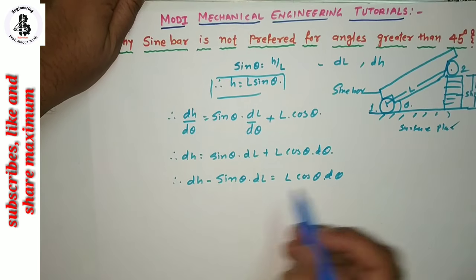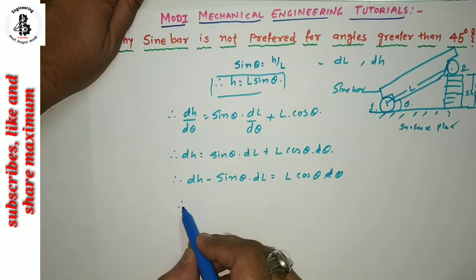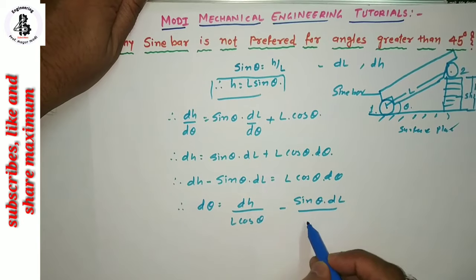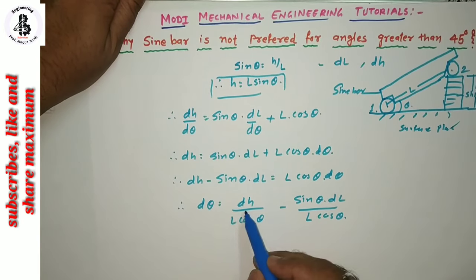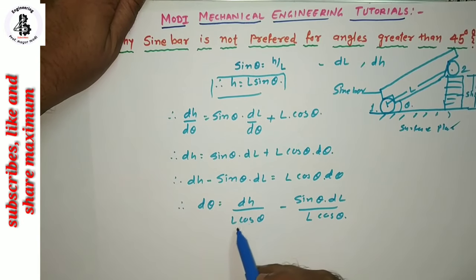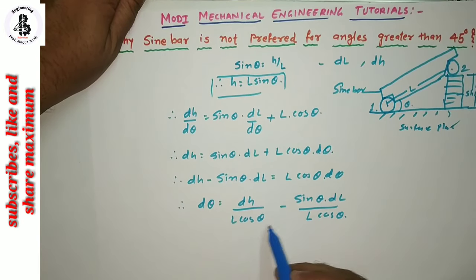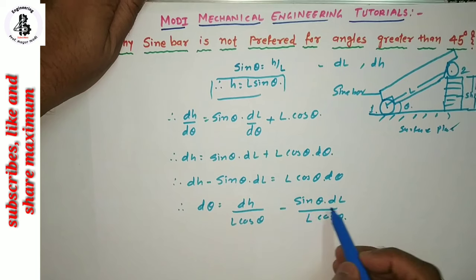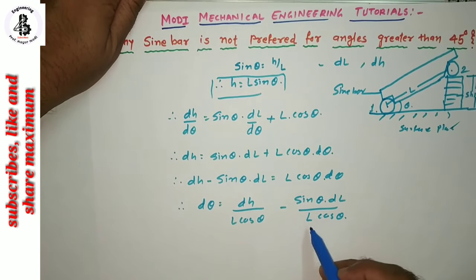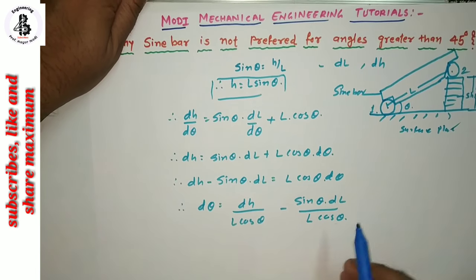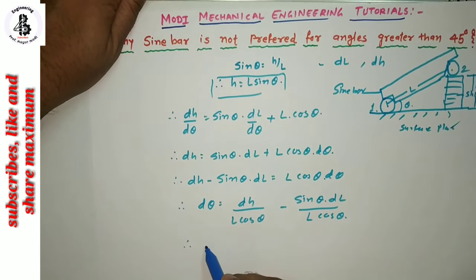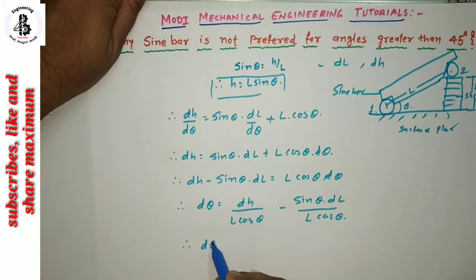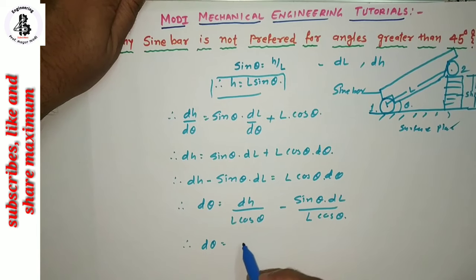Rearranging: dH minus sine theta dL equals L cosine theta d theta. Therefore, d theta equals dH upon L cosine theta minus sine theta dL upon L cosine theta.